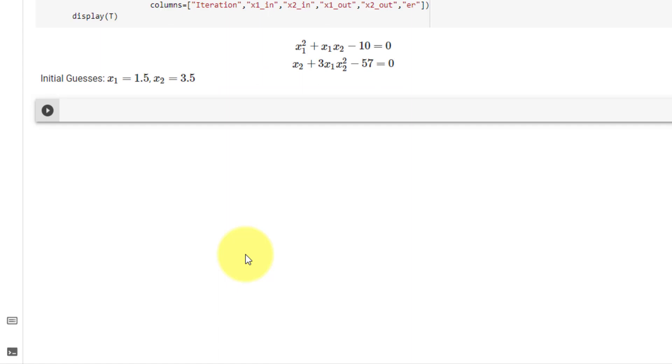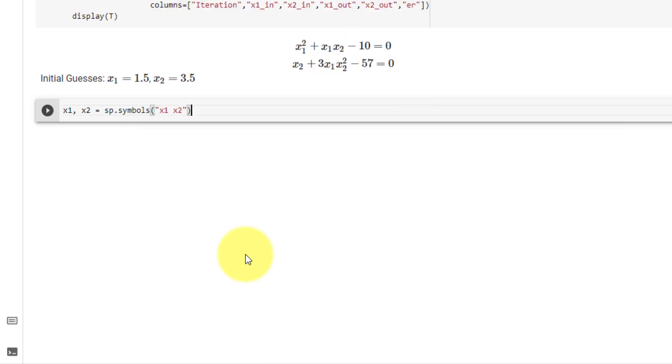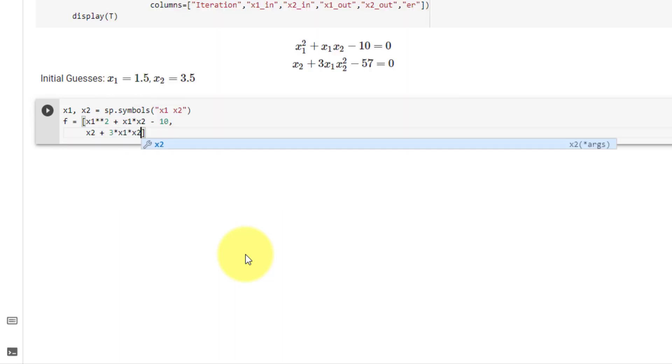Moving on, we will solve the following set of nonlinear equations using our function. The first step is to declare x1 and x2 equal to sympy dot symbols x1 space x2. Then we will declare all of our equations inside our f list. Our first equation is x1 squared plus x1 times x2 minus 10 comma. Our second equation is x2 plus 3 times x1 times x2 squared minus 57. Then our x list will be a list of x1 and x2.